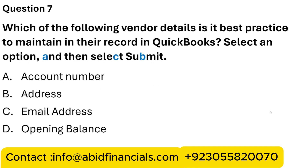Question 7. Which of the following vendor details is it best practice to maintain in their record in the books? The four options are: Account Number, Address, Email Address, and Open Balance. The correct answers are Account Number, Address, and Opening Balance.